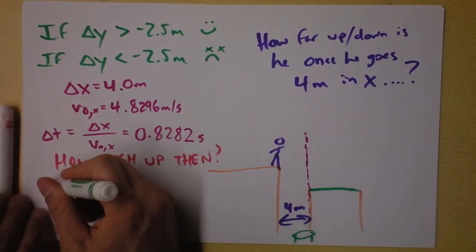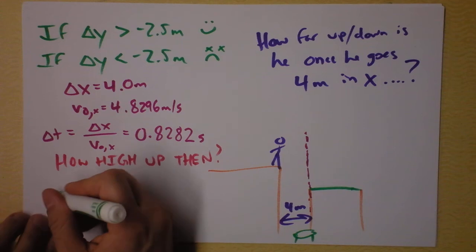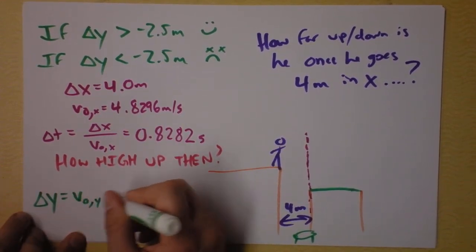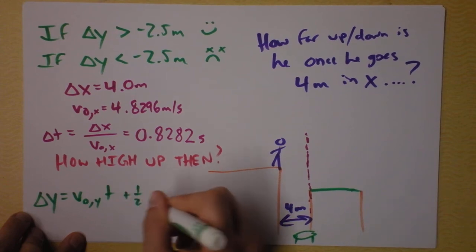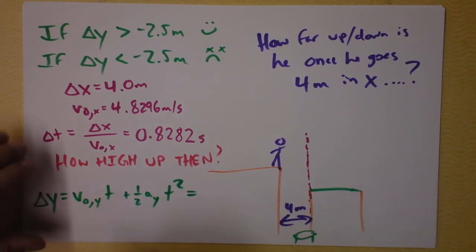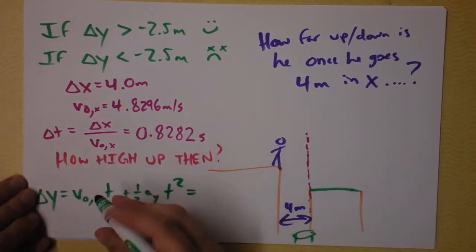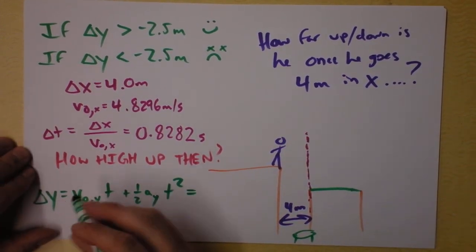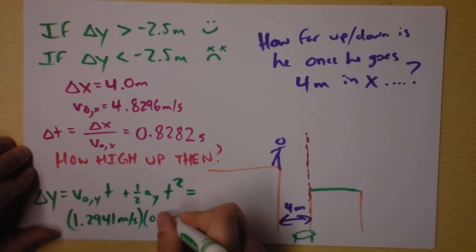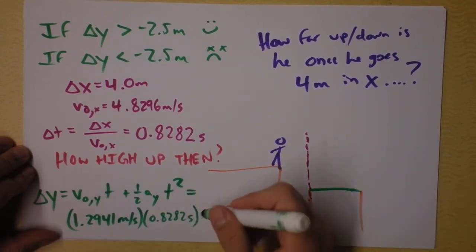The time is 0.8282 seconds. And I get delta y equals the initial velocity in the y direction times time plus one half the acceleration in the y direction times time squared. And I plug in that time. Should I write this out for you? Okay, I'll write it out for you. Initial velocity in the y direction is 1.2941 meters per second. And then I'm supposed to multiply that by the time, which is 0.8282 seconds. That'll have units of meters. That's good.